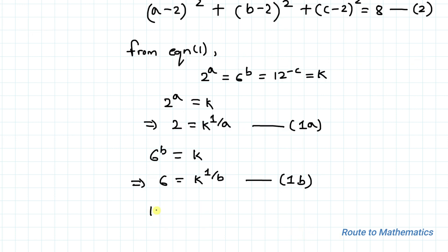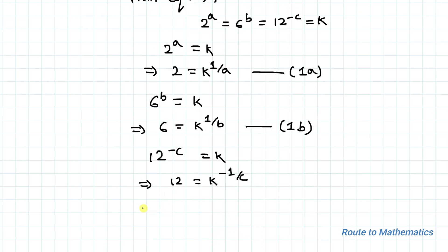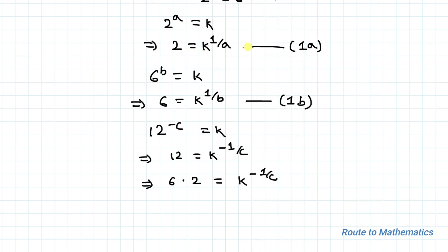Similarly, from 12 to the power minus c equals k, we get 12 equals k to the power minus 1 by c. We can write 12 as 6 multiplied by 2, so: k to the power 1 by a multiplied by k to the power 1 by b equals k to the power minus 1 by c.